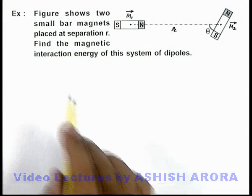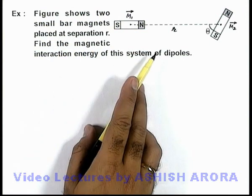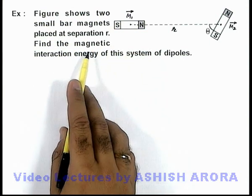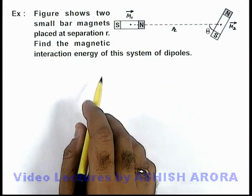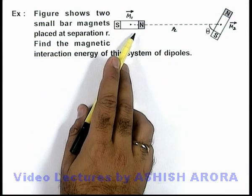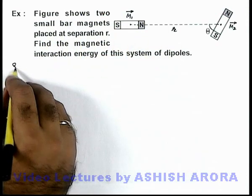In this example, the figure shows two small bar magnets placed at separation r. We are required to find the magnetic interaction energy of this system of dipoles. Here we are treating the two magnets as dipoles because these are very small bar magnets.